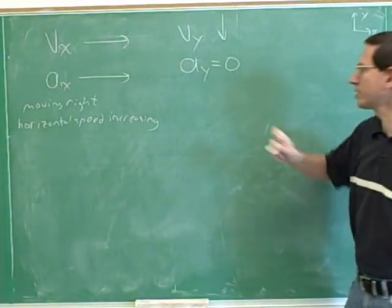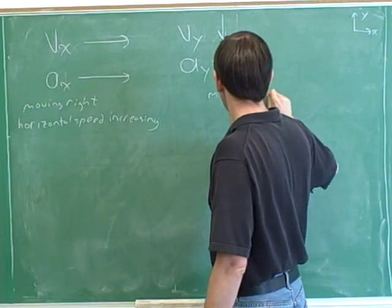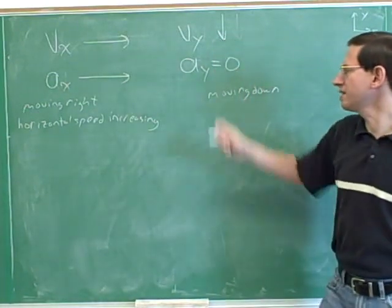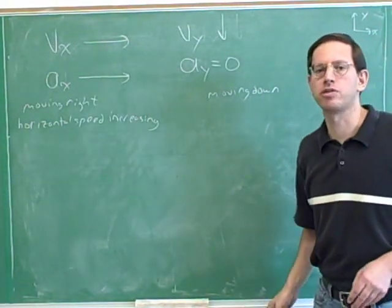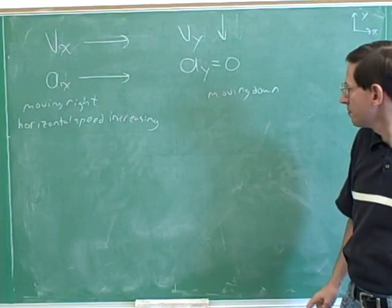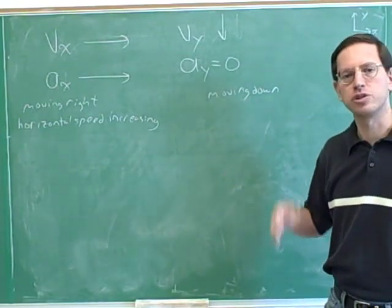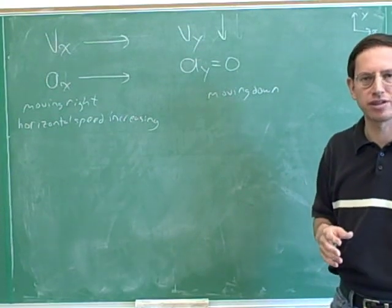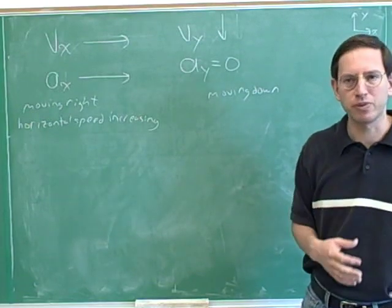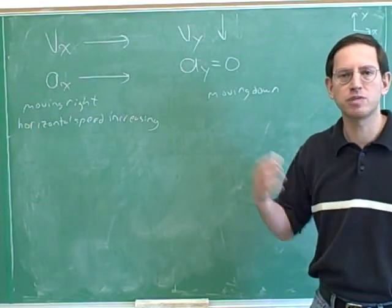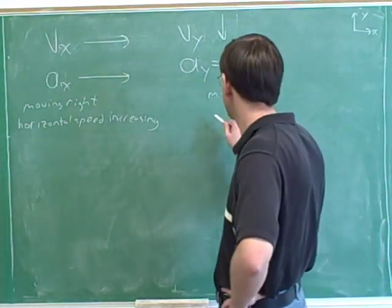How about vertically? Vertically, the velocity is down, so we're moving down. But what does it mean if the vertical acceleration is zero? If the acceleration is parallel to the velocity, we're speeding up. If the acceleration is anti-parallel to the velocity, we're slowing down. So if the acceleration is zero, we must be neither speeding up nor slowing down — which means constant speed. So our vertical speed here must be constant.